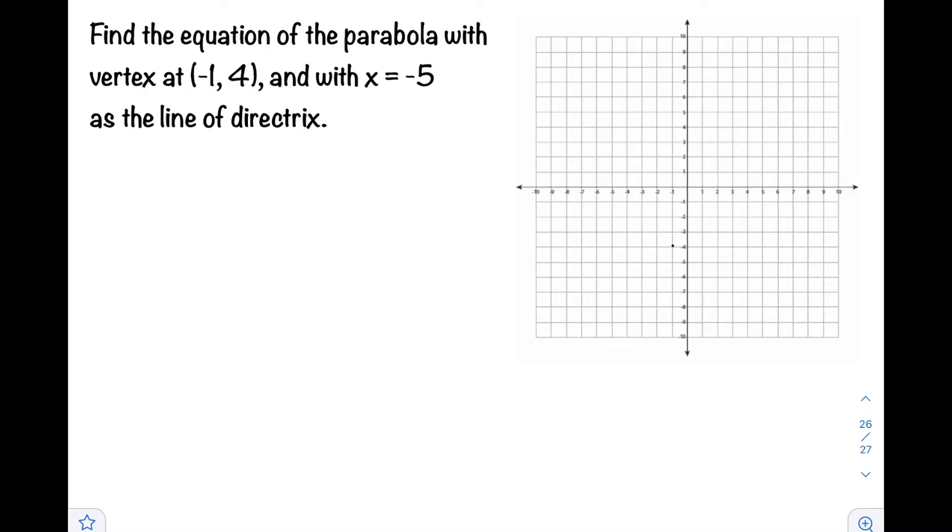The first thing you need to do is plot the given information on the cartesian plane to visualize what parabola we have. Let's start first with the vertex at (-1, 4), which is in quadrant 2 of the cartesian plane.